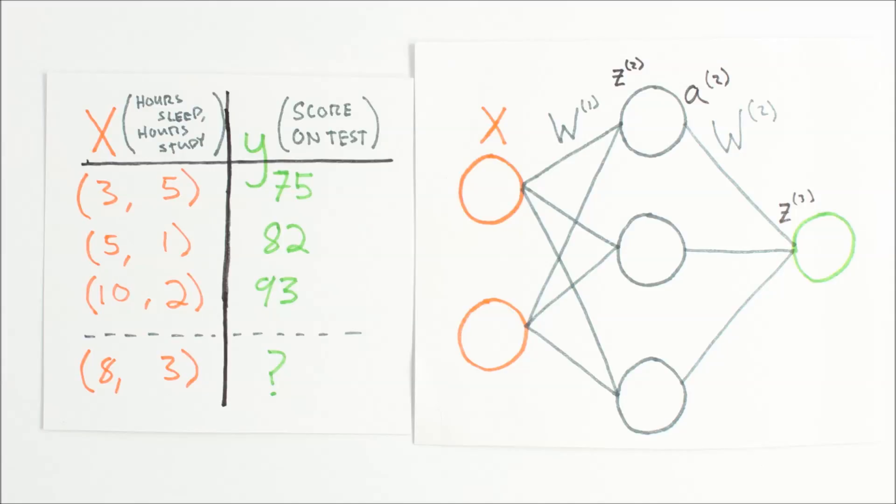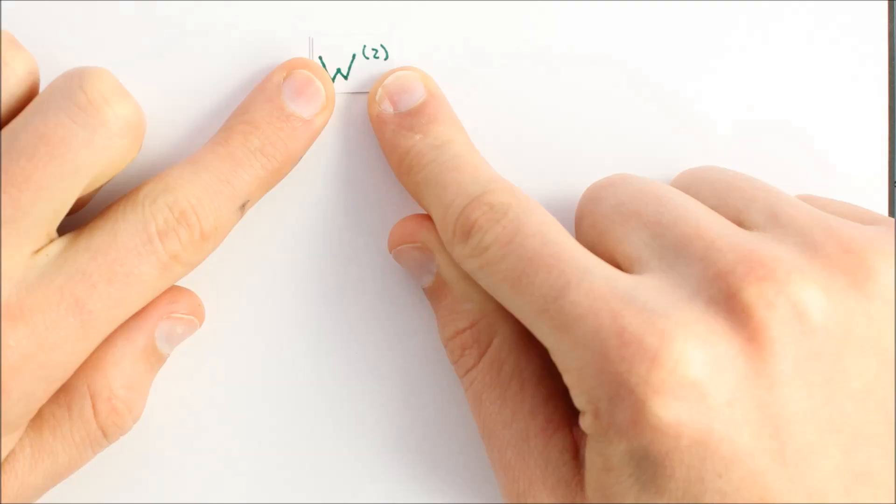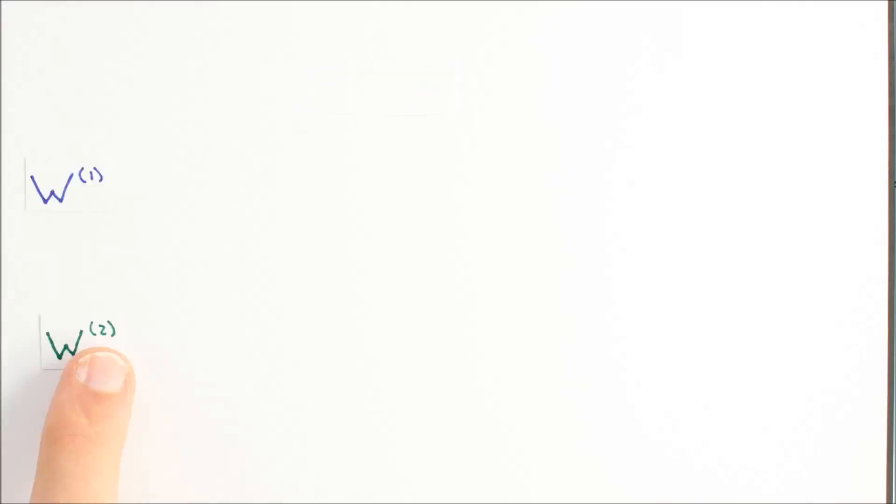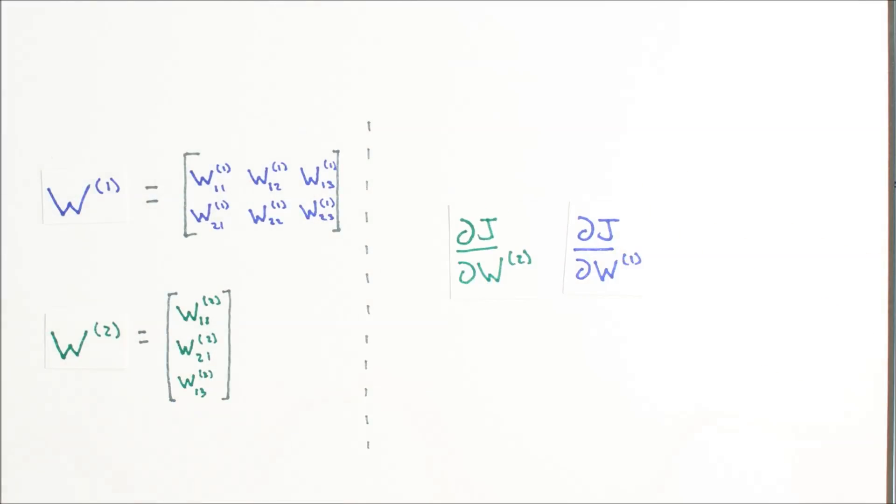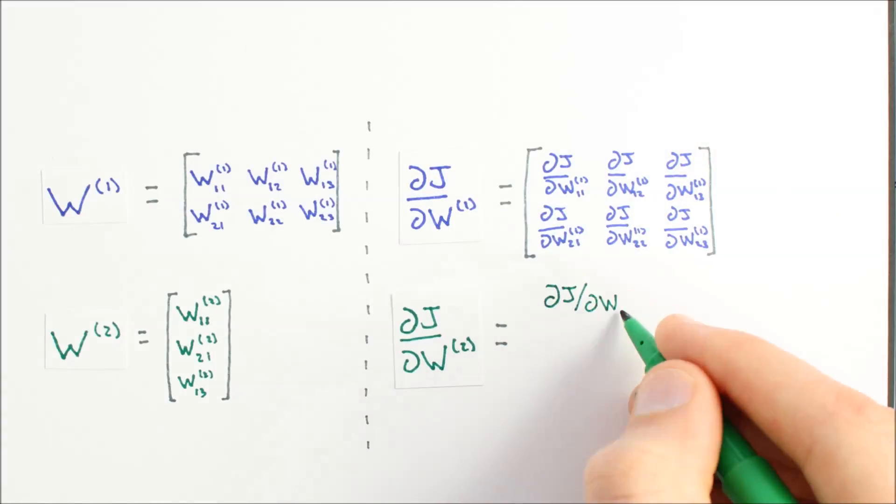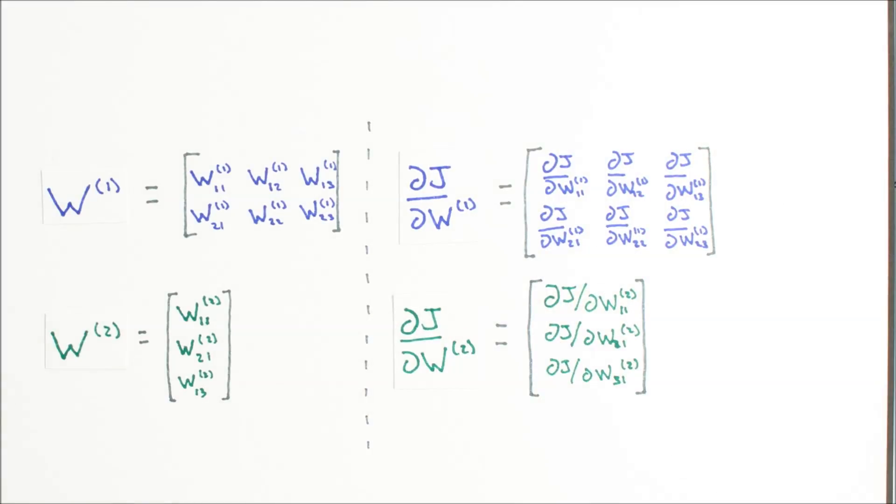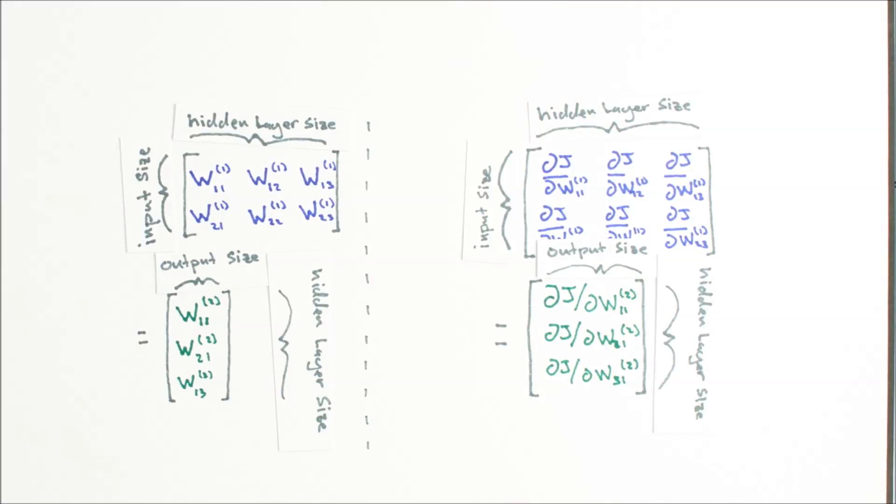To perform gradient descent, we need an equation and some code for our gradient djdw. Our weights w are spread across two matrices, w1 and w2. We'll separate our djdw computation in the same way, by computing djdw1 and djdw2 independently. We should have just as many gradient values as weight values, so when we're done, our matrices djdw1 and djdw2 will be the same size as w1 and w2.